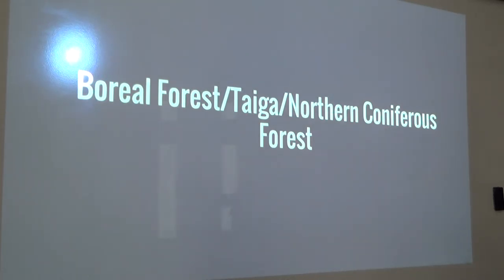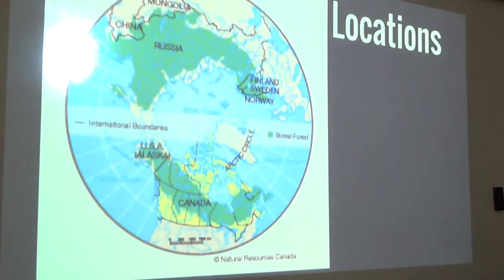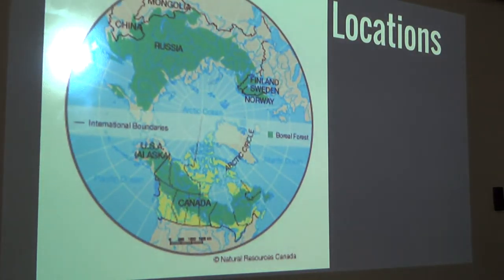Human interactions and interferences include poaching, overgrazing, clearing the land for crops, and converting the land for agriculture and urban development.